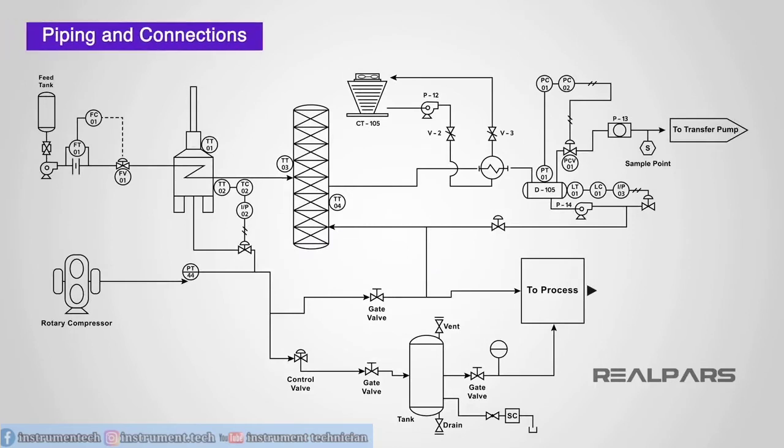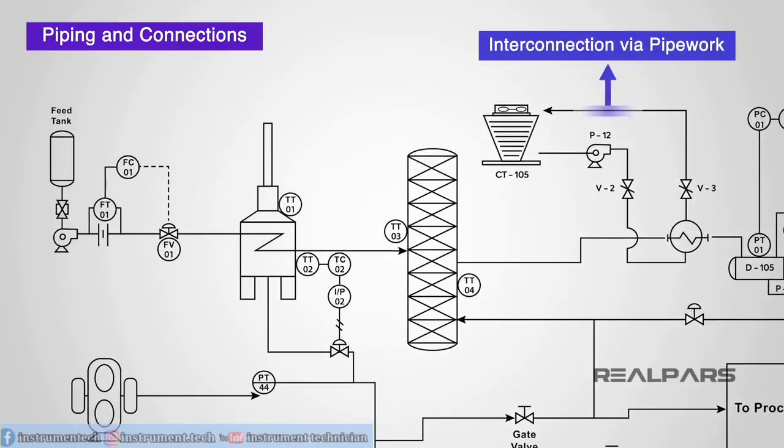The piping or connection lines on the PNID also tell us about the instrument. For example, a solid line would indicate the inner connection is via pipe work, whereas a dotted line would indicate an electrical connection.